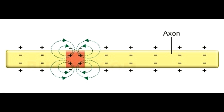To put myelin sheath in a nutshell, we can say that it is vital for the efficient and healthy functioning of neurons and ultimately the nervous system. The absence of myelin can cause severe, and in some cases, even fatal diseases.